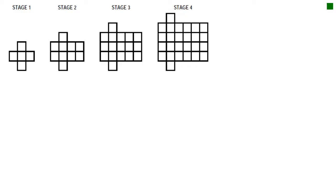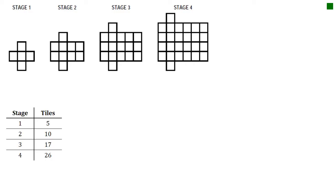We'll use the same logic again to work out the next pattern. The T-table is filled in by counting the tiles in each stage. Now we're going to confirm this is a quadratic pattern by finding first differences: plus 5, plus 7, plus 9. The first differences are not constant, so it's not linear. The second difference is plus 2, and dividing 2 by 2 gives 1, so I'm expecting 1X squared.